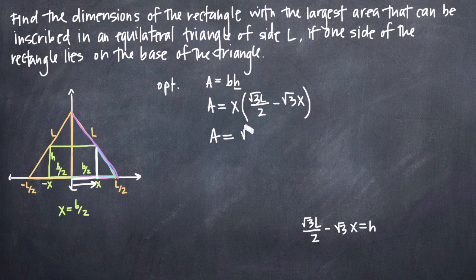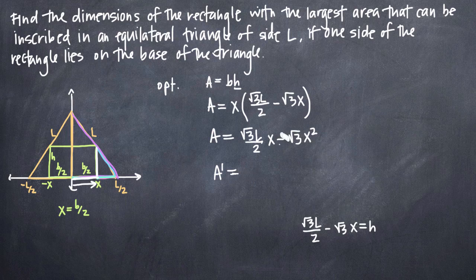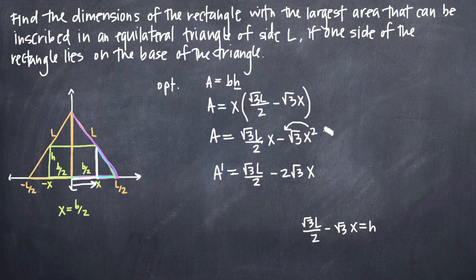Let's simplify: A = √3·L/2·x − √3·x². Now we take the derivative with respect to x, calling it A prime. The first term gives us the constant coefficient √3·L/2. For the second term, using the power rule, the 2 comes out front and the exponent drops to 1, giving 2√3·x. So A′ = √3·L/2 − 2√3·x.